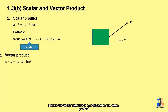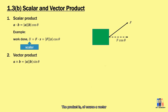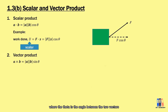Next is the vector product, also known as the cross product. The product is of course a vector, which has a magnitude of a multiplied by b multiplied by sine theta, where theta is the angle between the two vectors.